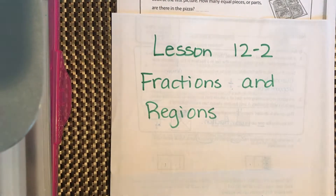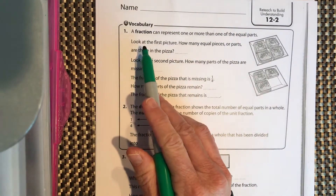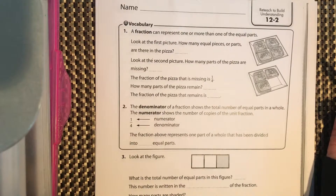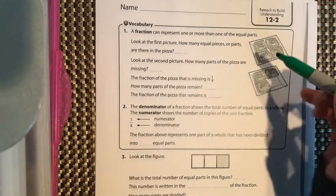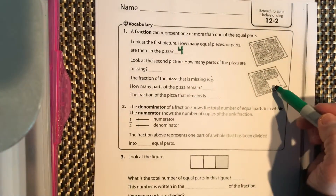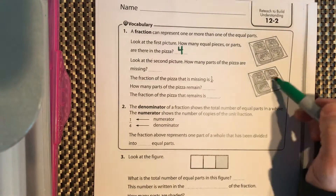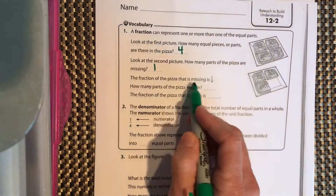We're going to do lesson 12-2: fractions and regions. A fraction can represent more than one of the equal parts. In the last lesson we focused on one-fourth, one-fifth, one-sixth, one-half. Look at the first picture — it's like a square or piece of bread divided up. How many equal parts total do we have? Four.